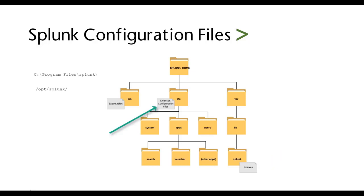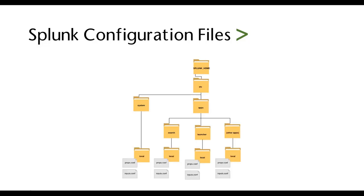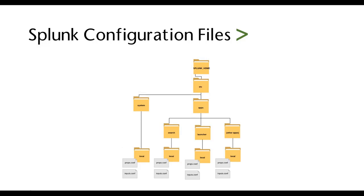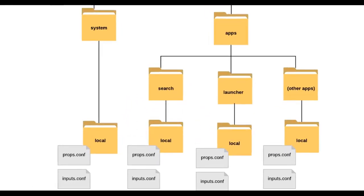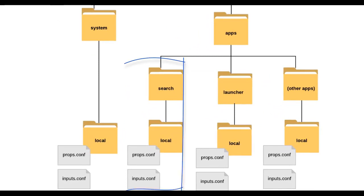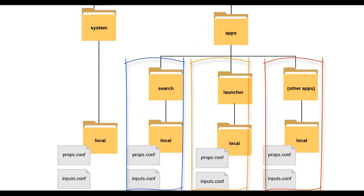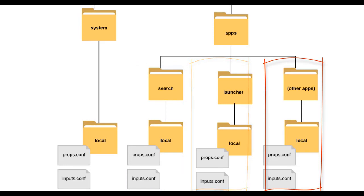We used the bin folder to do things like stop and restart Splunk. If we navigate to our etc folder, then system, then local, this is where our main configuration files exist — the ones that come with Splunk. Each app has its own set of configuration files as well. The search app has a set of configuration files, the launcher app, and any other app we install is really just a collection of configuration files.